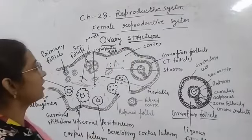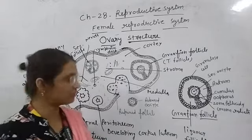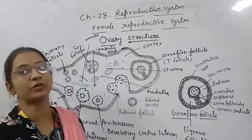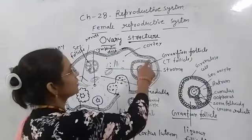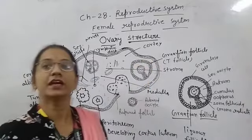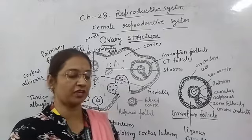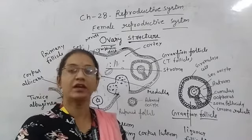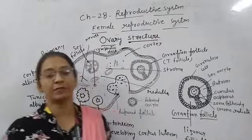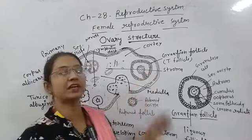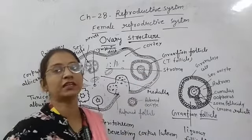This is the outer layer of the ovary and it is called the visceral peritoneum. Inside that is a white fibrous layer known as Tunica Albuginea. These two layers are present in the outer covering of the ovary.